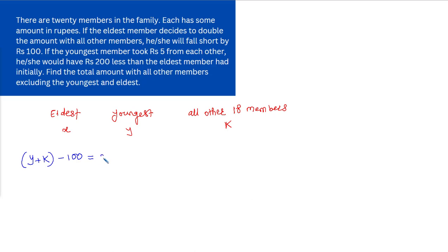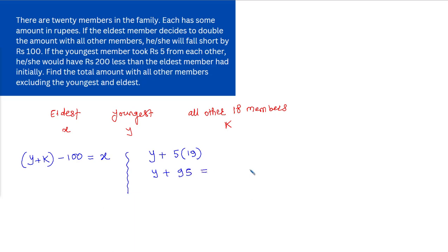Now the youngest member is having Y rupees. The youngest member is going to take 5 rupees from each of the other 19 members, which is 5 into 19 equals 95. So the amount with the youngest member becomes Y plus 95, and that equals X minus 200 — that is, 200 rupees less than the initial amount with the eldest member.